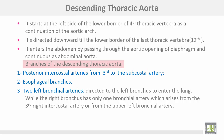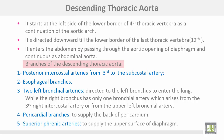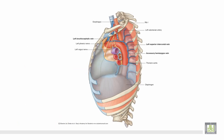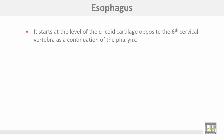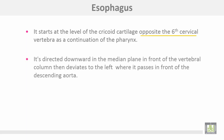Branches of the descending aorta: number one, posterior intercostal arteries from the 3rd to the subcostal artery. Esophageal branches, and left bronchial arteries directed to the left bronchus to enter the lung, while the right bronchus has only one bronchial artery, which arises from the 3rd right intercostal artery or from the upper left bronchial artery. Lastly, pericardial branches to supply the back of the pericardium, and superior phrenic arteries to supply the upper surface of the diaphragm. This figure shows the descending aorta descending in the posterior mediastinum.